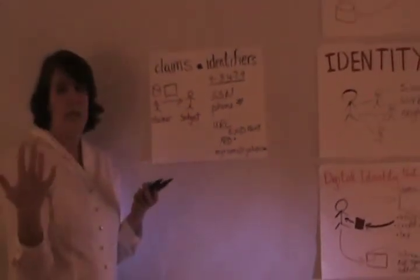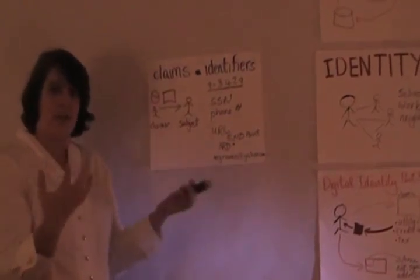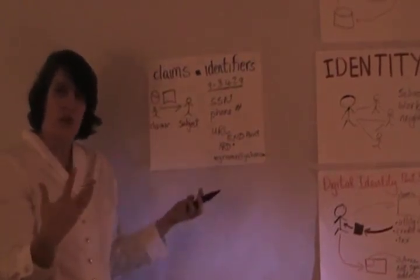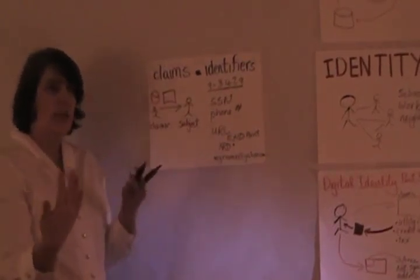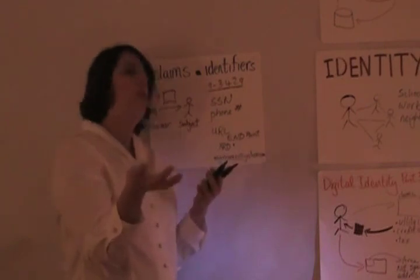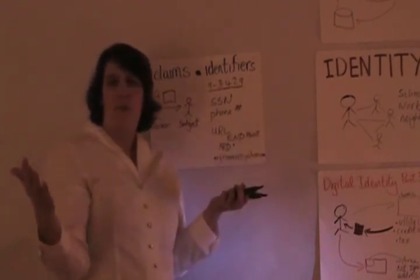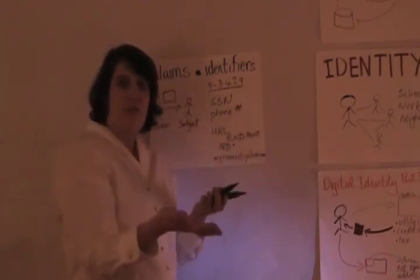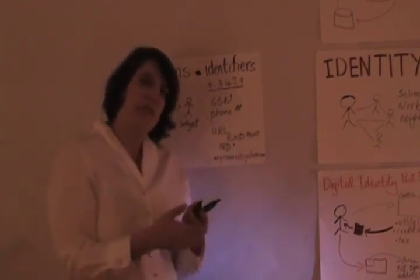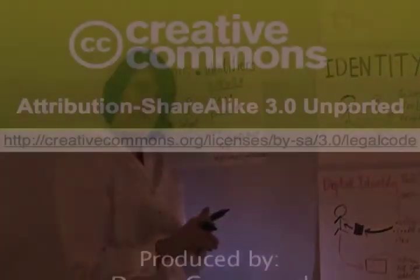You can see the difference between claims and identifiers: claims have a two-part structure, while identifiers are pointers in a namespace pointing to specific people or entities.